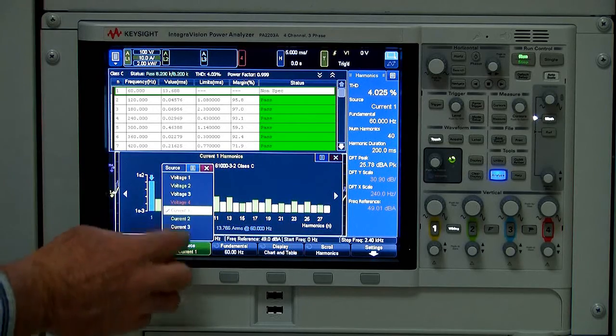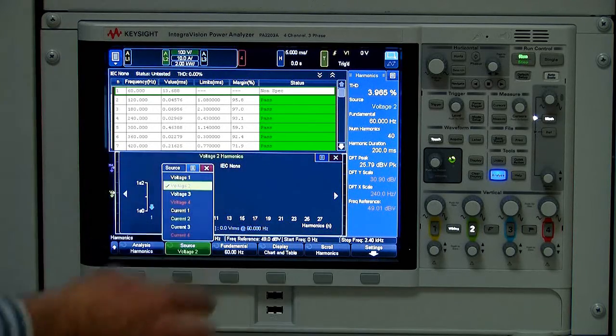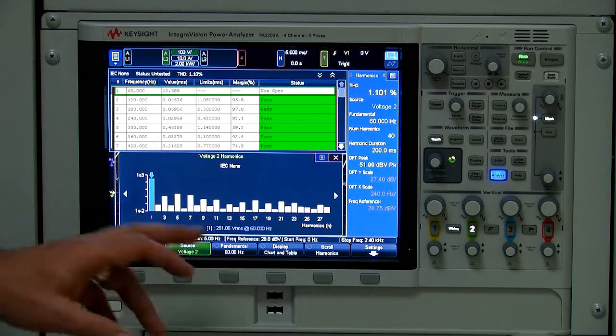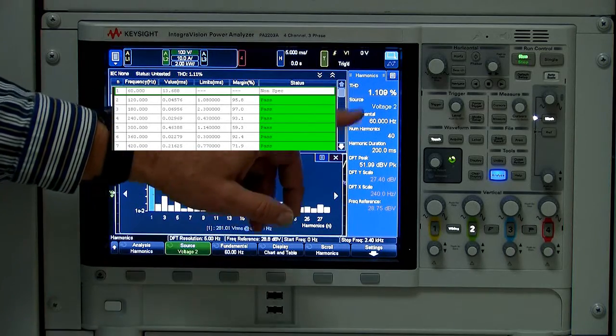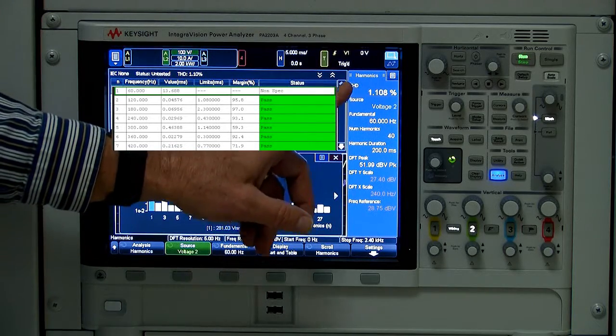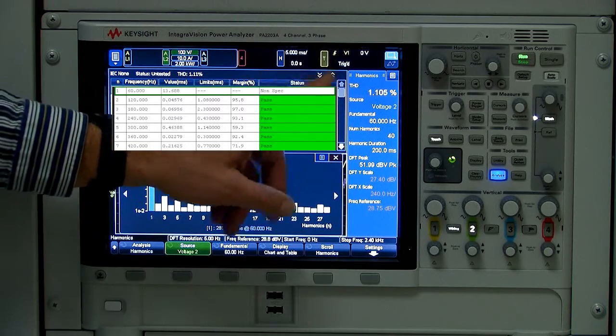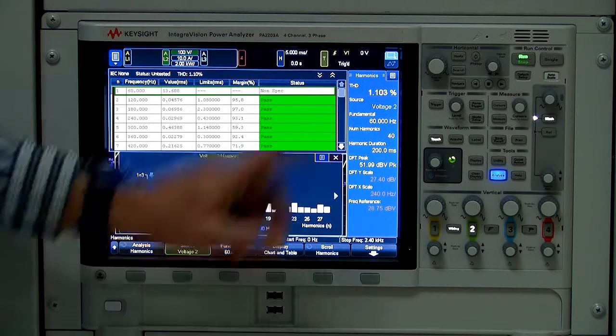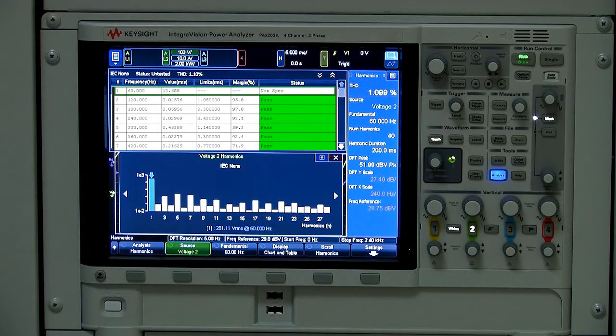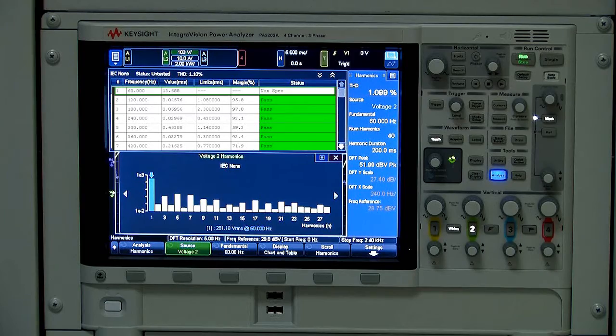You could look at the same thing for maybe one of the voltage channels. In that case, significantly lower THD, higher signal integrity. The voltage is actually measured about 1% in this case.